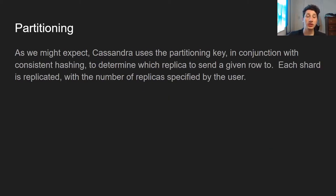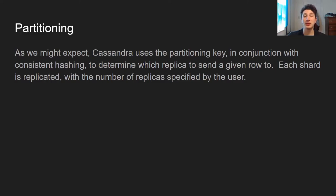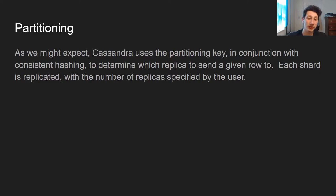In terms of partitioning, Cassandra uses the partition key in accordance with consistent hashing. Consistent hashing puts all the partitions on machines in a way such that when new nodes are added or removed from a cluster, there's minimal rebalancing of rows.